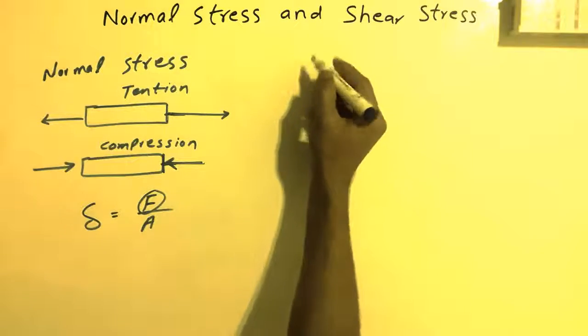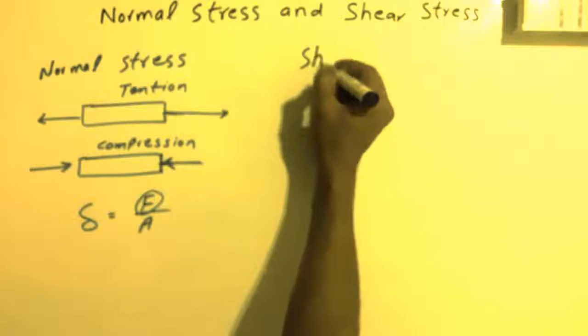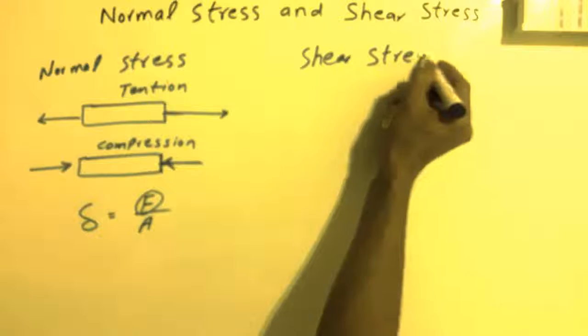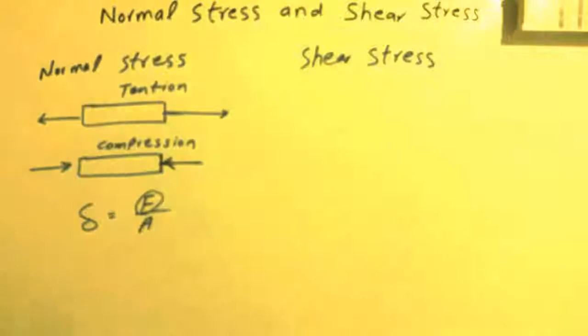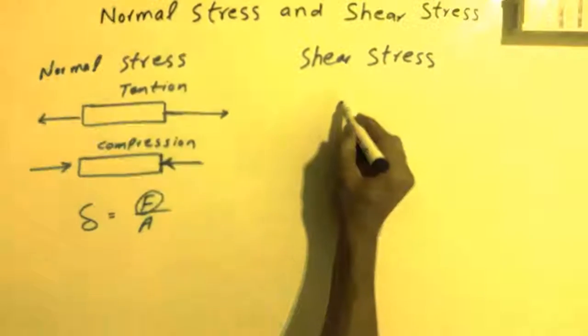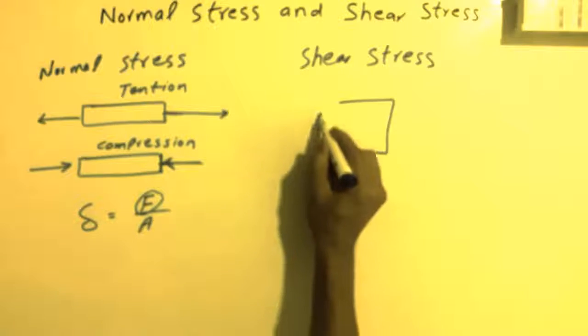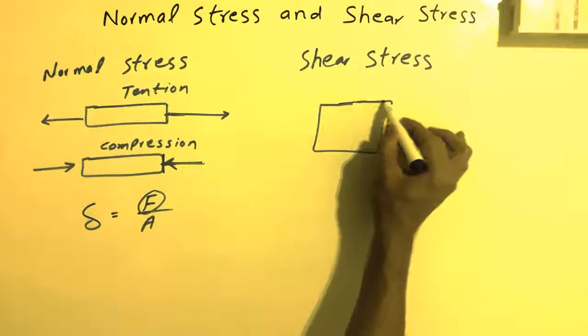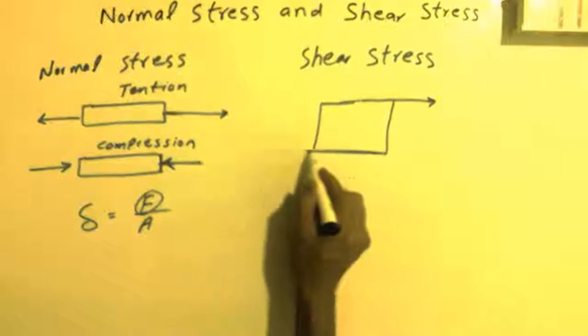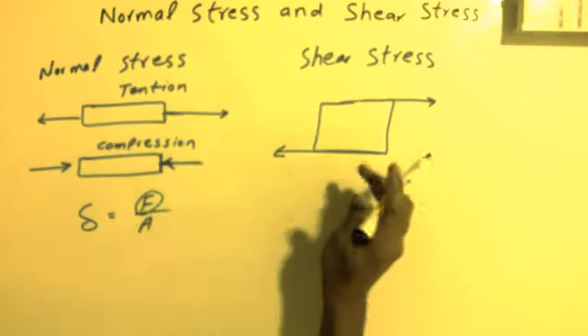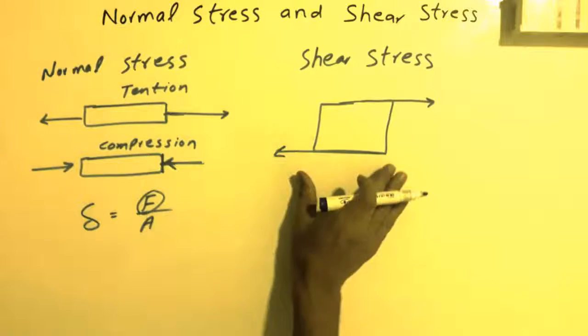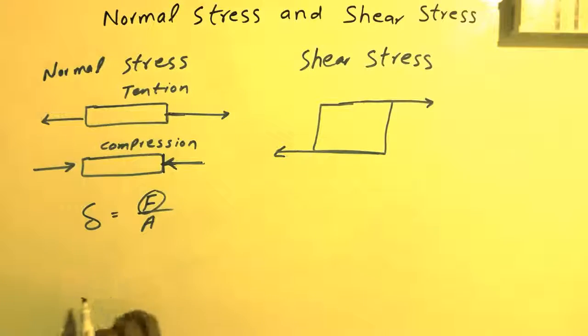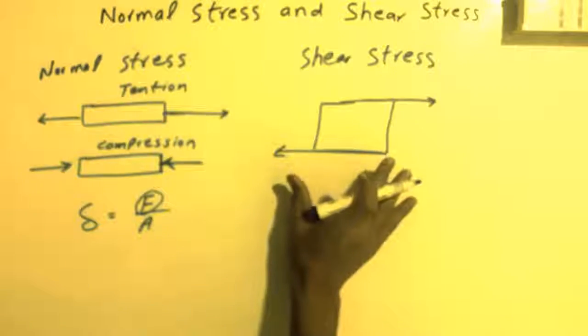Now, second one, we have shear stress. In shear stress, the force acts parallel to the surface but in opposite directions. Let's say we have a member, and the forces are acting parallel to the member, but these forces have to be in opposite directions.